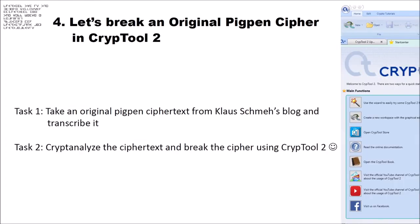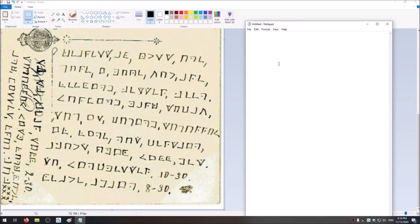Now that we know how the Pigpen cipher works, let's break an original Pigpen cipher in CrypTool 2. I want to take an original Pigpen ciphertext from Klaus Schmeh's blog and transcribe it. Klaus Schmeh is a good friend of the CrypTool 2 team and a good friend of this channel — he is a crypto author and blogger who blogs regularly about ciphertexts and cryptology. I took a ciphertext from his blog and want to cryptanalyze it using CrypTool 2. Here's the ciphertext from a postcard found on his blog. I will link to his blog below in the video description.